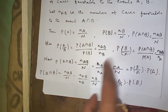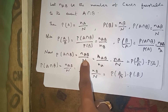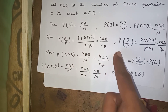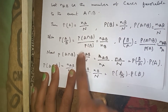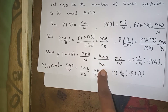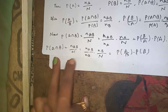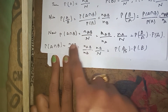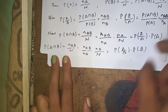Now, P(A ∩ B) = N_AB / N. We rewrite this as (N_AB / N_A) · (N_A / N). Here N_AB / N_A = P(B | A) and N_A / N = P(A). Therefore P(A ∩ B) = P(A) · P(B | A). Similarly, rewriting as (N_AB / N_B) · (N_B / N) gives P(A ∩ B) = P(B) · P(A | B). Hence proved.